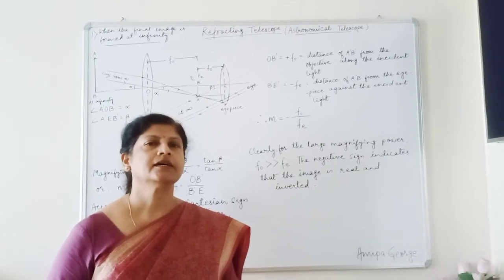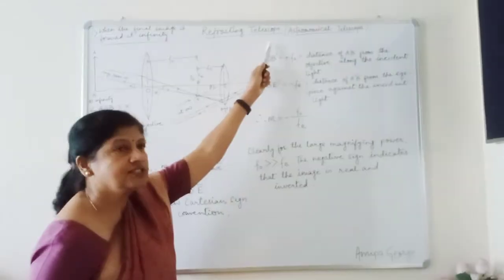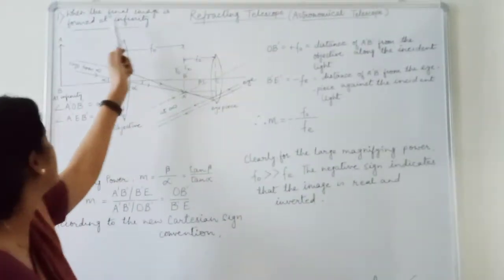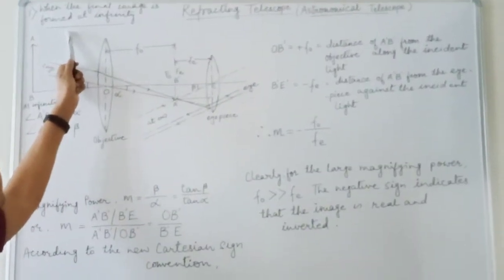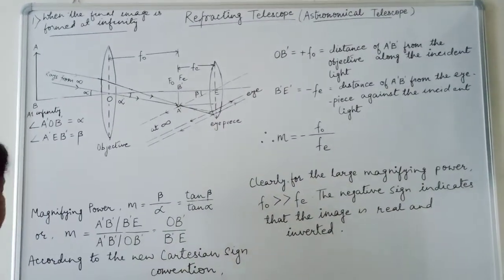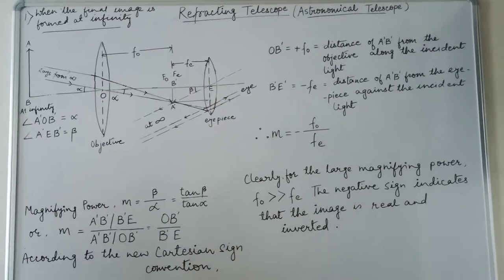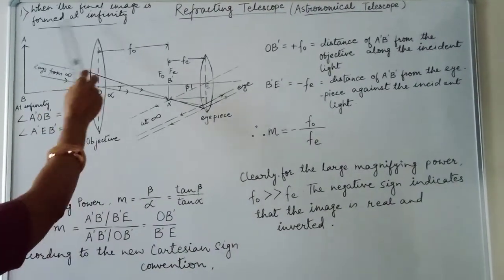Students, today we study refracting telescope when the final image is formed at infinity. Now, for normal adjustment, see the ray diagram.